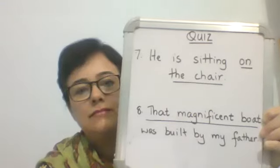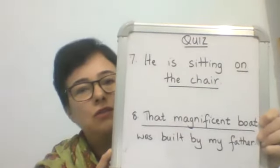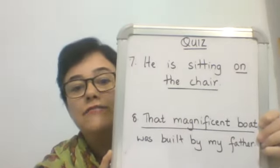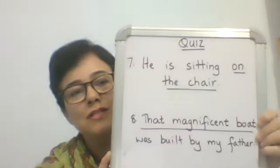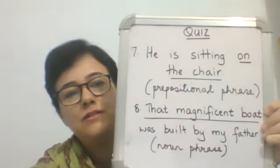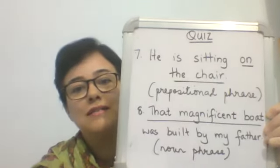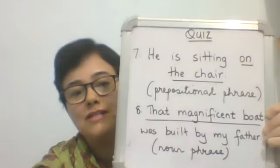The fifth sentence: 'They ran really fast' — the phrase is 'really fast.' The sixth sentence: 'I am very happy with her work' — the phrase is 'very happy.' The fifth one is an adverb phrase and the sixth one is an adjective phrase. Now for the last two: 'He is sitting on the chair' — the phrase is 'on the chair'; and 'That magnificent boat was built by my father' — the phrase is 'that magnificent boat.' The seventh is a prepositional phrase and the eighth is a noun phrase.